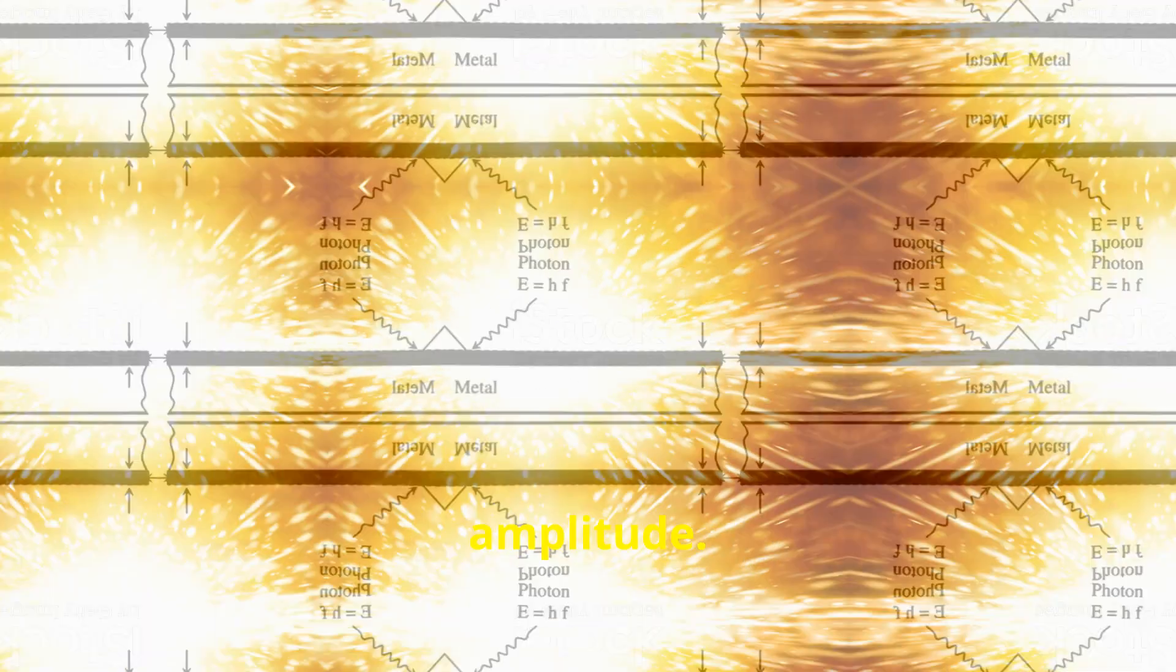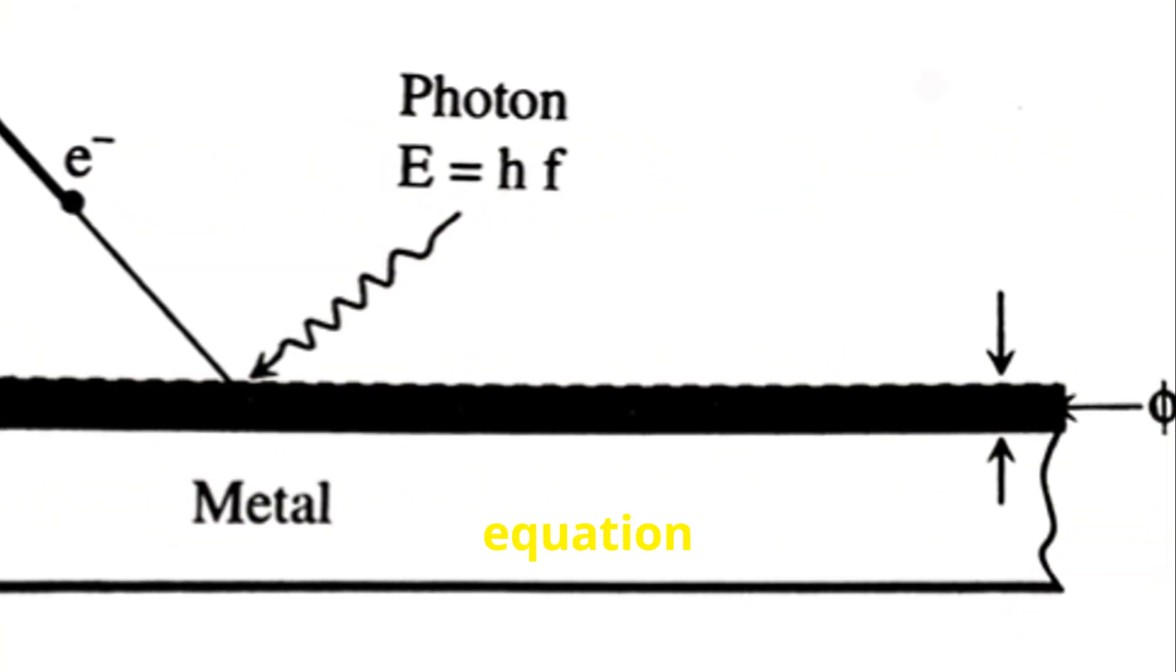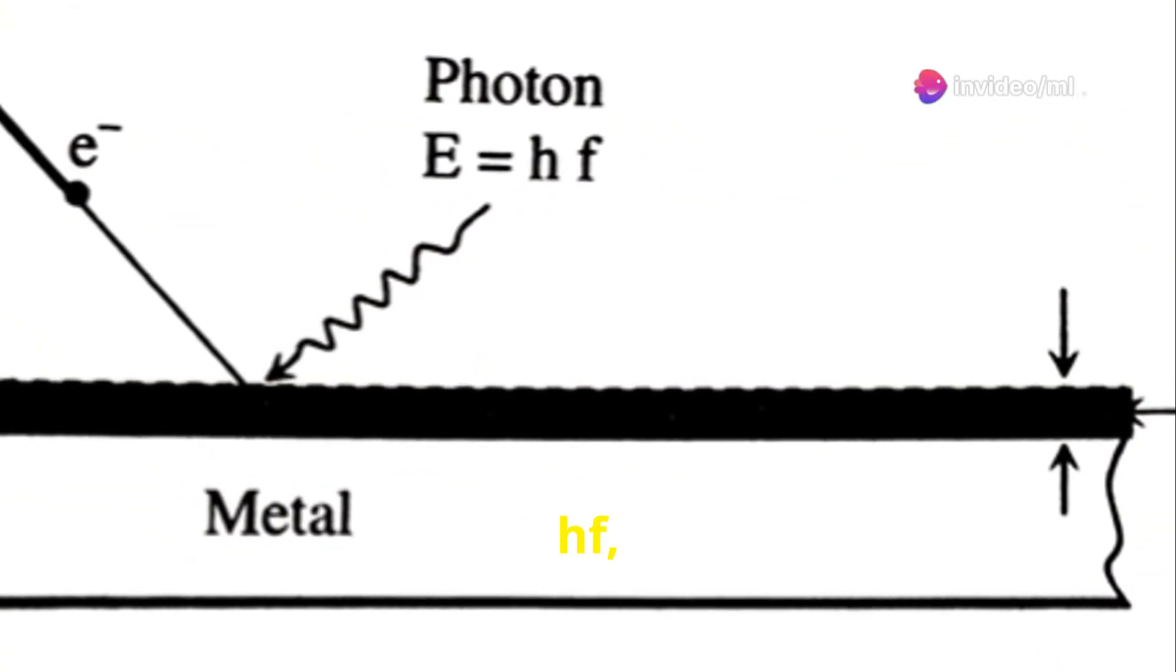Einstein proposed that each photon carries a specific amount of energy determined by its frequency, not its amplitude. This energy is given by the equation E equals hf, where E is the energy of the photon,